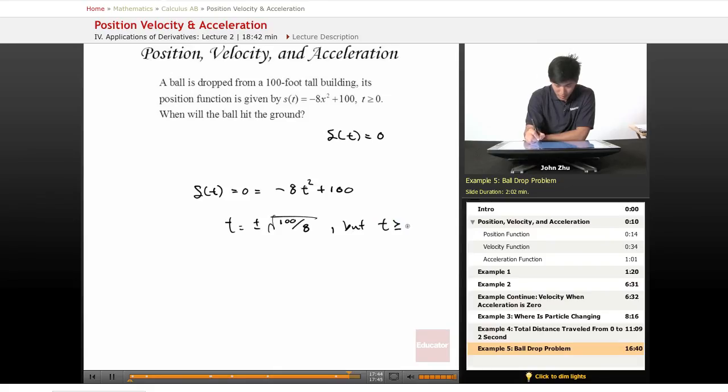But t must be greater than or equal to zero, so we have to take out the negative version. It's just simply square root of 100 over 8, or 3.5 seconds.